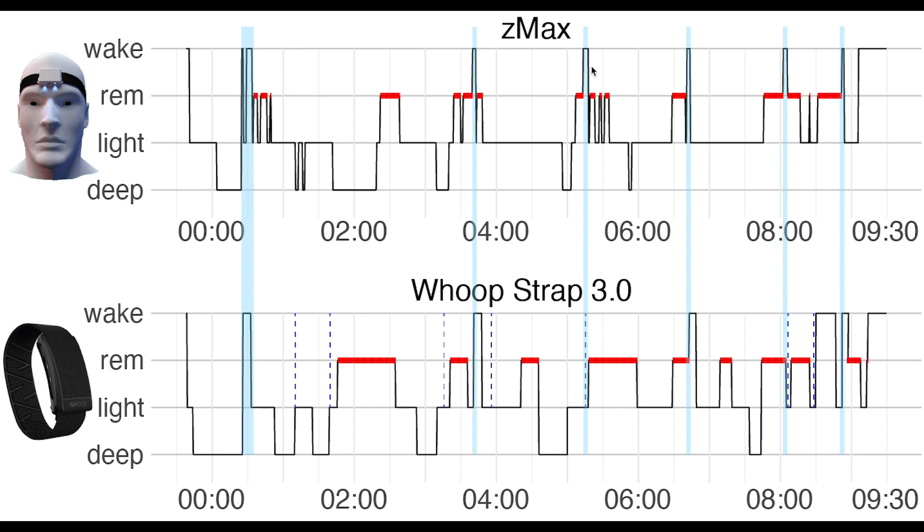Now there are of course some small differences so here this moment that I was awake according to the ZMAX for a bit longer was only a short awakening according to the WHOOP strap. Now I must admit with the ZMAX I tried not to score these short awakenings since these were not the thing I was looking for so these are a bit more difficult to judge. And then finally here we have this period of awake according to the WHOOP strap where I was in REM sleep according to the ZMAX. So there are some small differences but overall for scoring awake the WHOOP strap does pretty well.